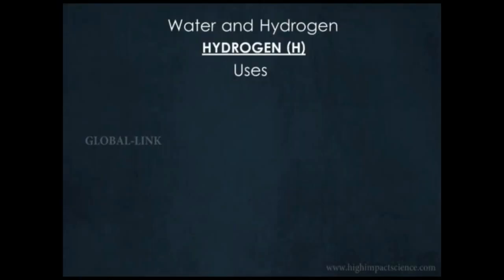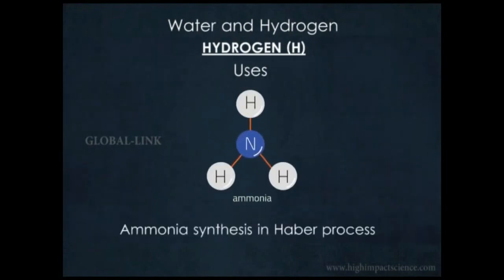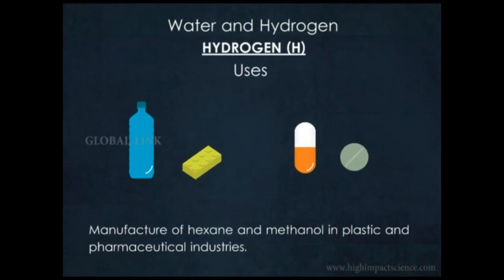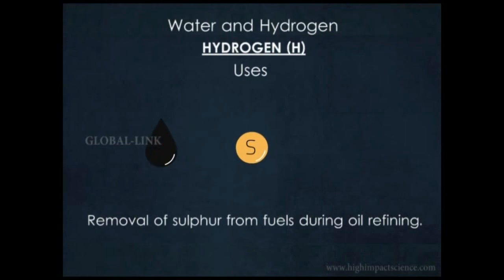Finally, the uses of hydrogen. In the chemical industry, hydrogen is used to make ammonia for agricultural fertilizers in the Haber process and to make methanol, which is needed to make plastics and pharmaceuticals. It is also used to remove sulfur from fuels during the oil refining process, where it forms the awful smelling hydrogen sulfide.